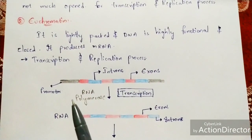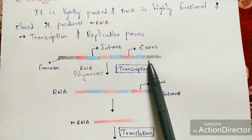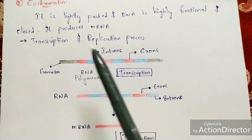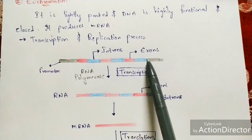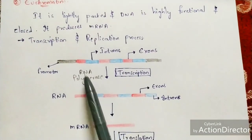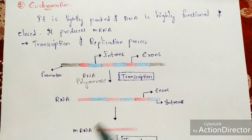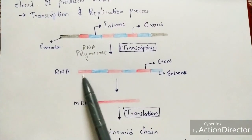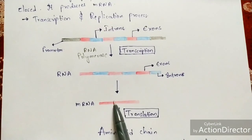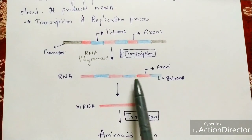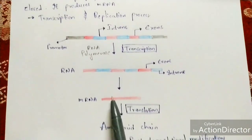Let us see a small introduction to the transcription process. A gene consists of introns and exons. By the enzyme RNA polymerase, the gene undergoes transcription — the promoter genes get removed, and then only introns and exons are present, forming RNA. Then introns are removed and only exons are conjoined, so that mRNA is formed. This is how the transcription process produces mRNA.